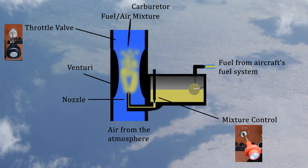Air is cooled inside the carburetor as a result of the reduced pressure and vaporization of fuel. The temperature can drop from relatively warm temperatures prior to the venturi to below freezing just after it. Ice can form inside the carburetor, restricting the flow of air to the engine and reducing engine performance.